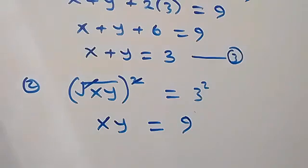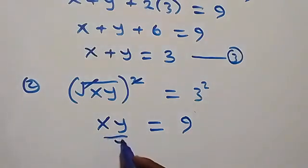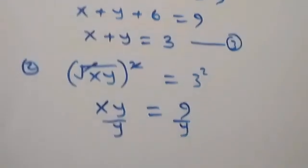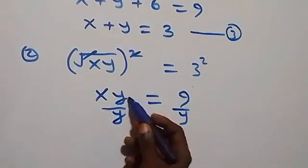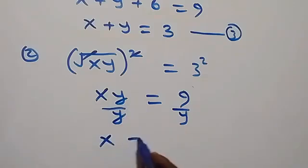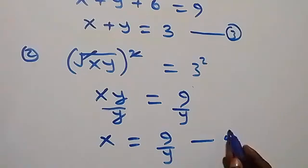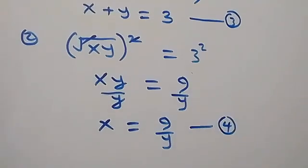Making x the subject by dividing both sides by y gives x = 9/y. Label this equation four. Now let's substitute equation four into equation three.